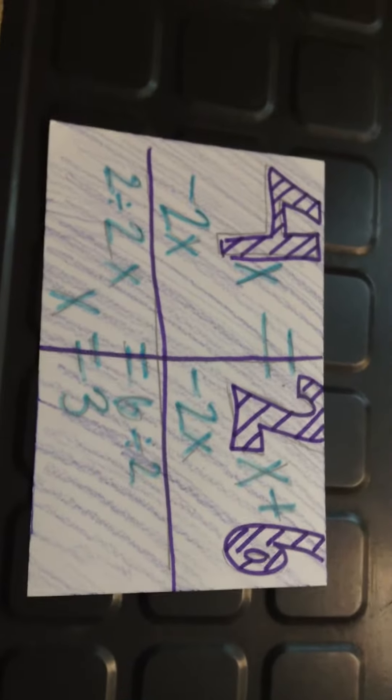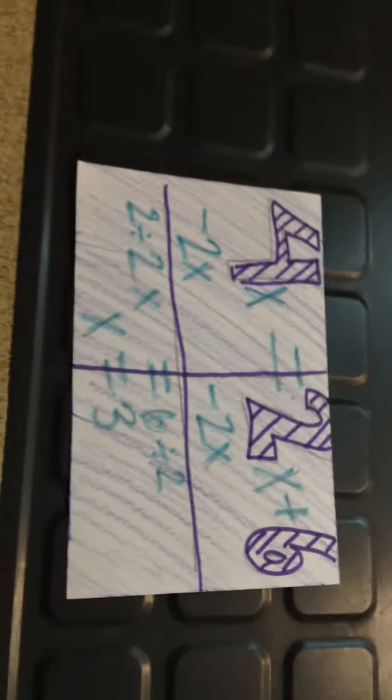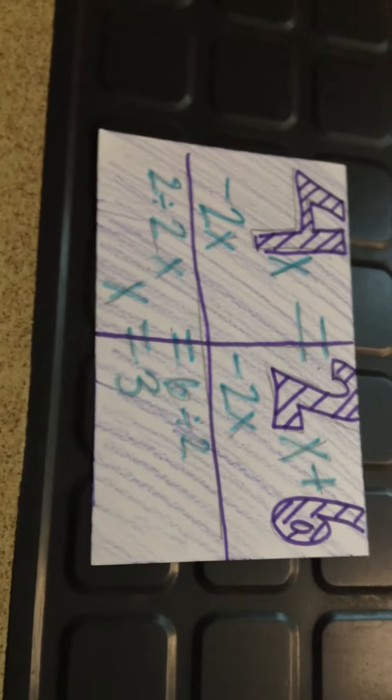Four x equals two x plus six. You subtract two x from both sides, and you divide two from both sides, which equals three x.